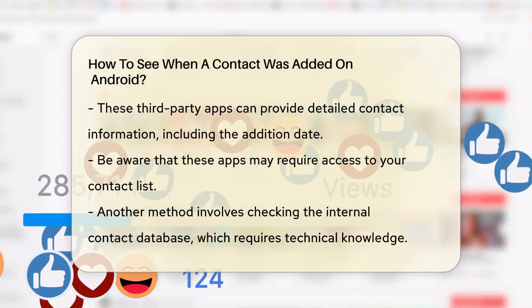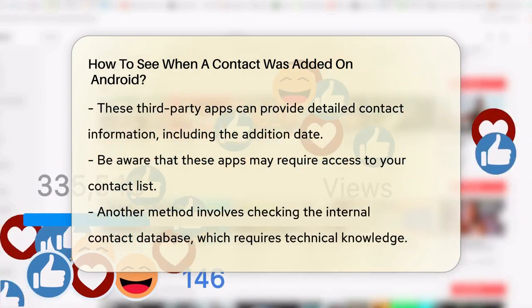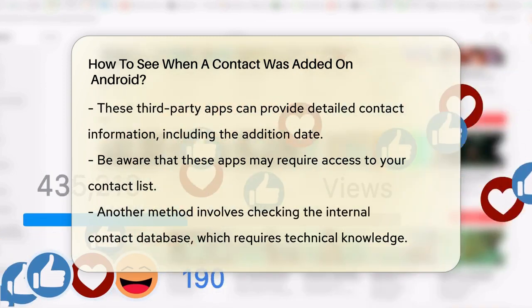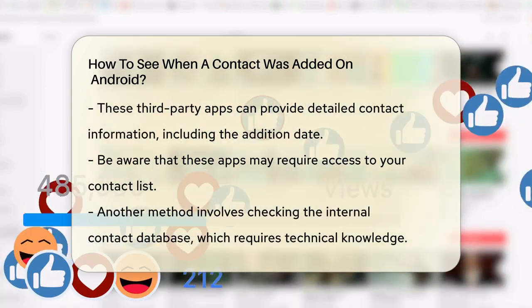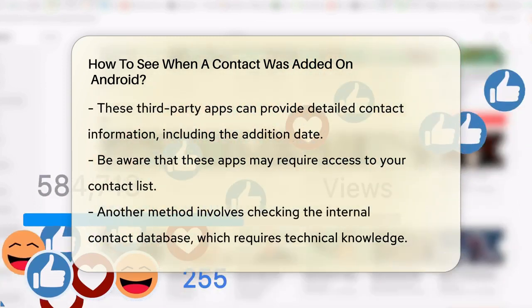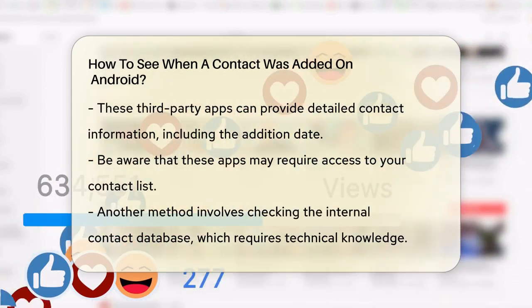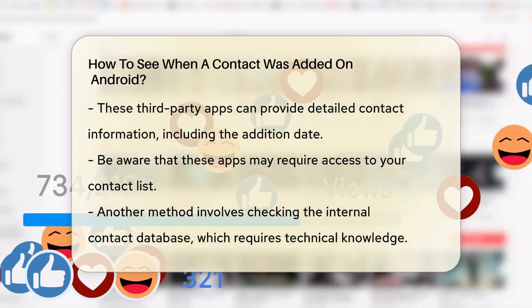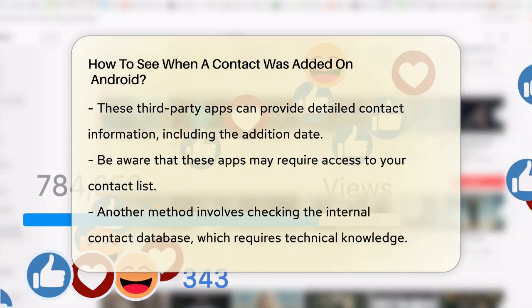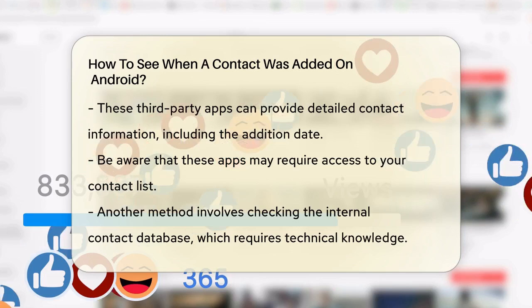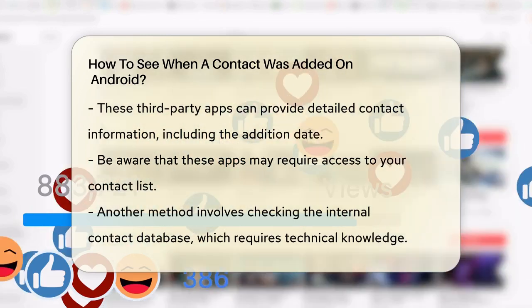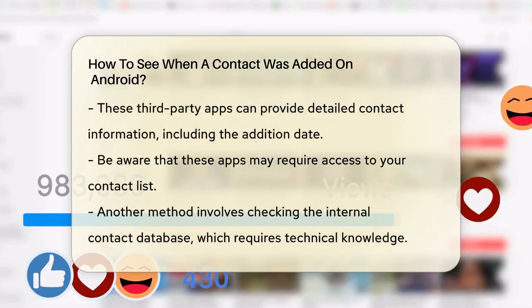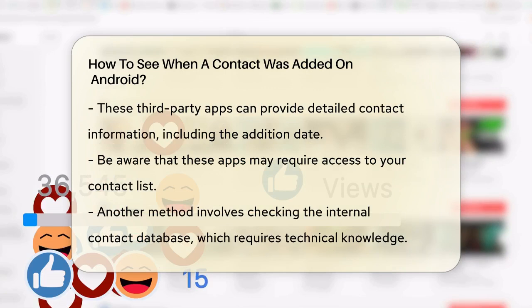There are several apps available on the Google Play Store that can help you view detailed contact information, including the date the contact was added. These apps often require access to your contact list and may offer additional features like contact management and backup.